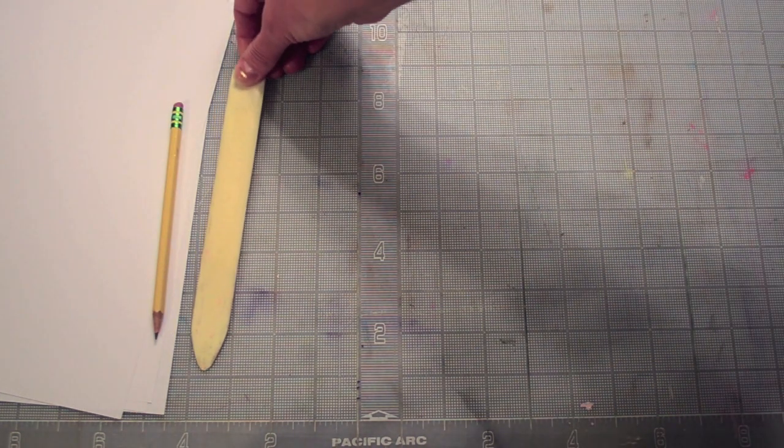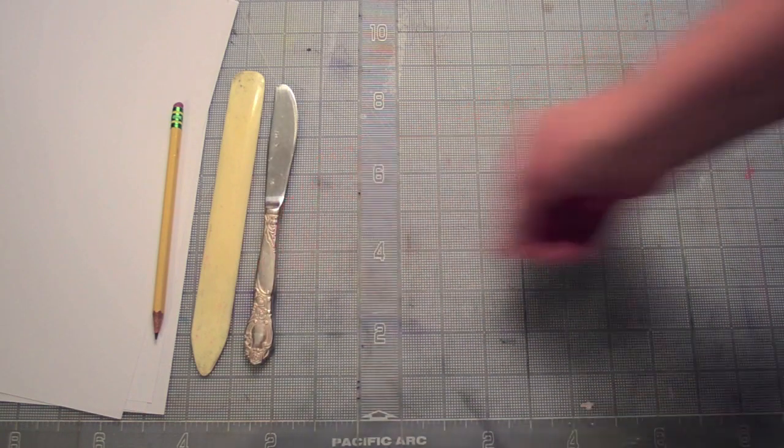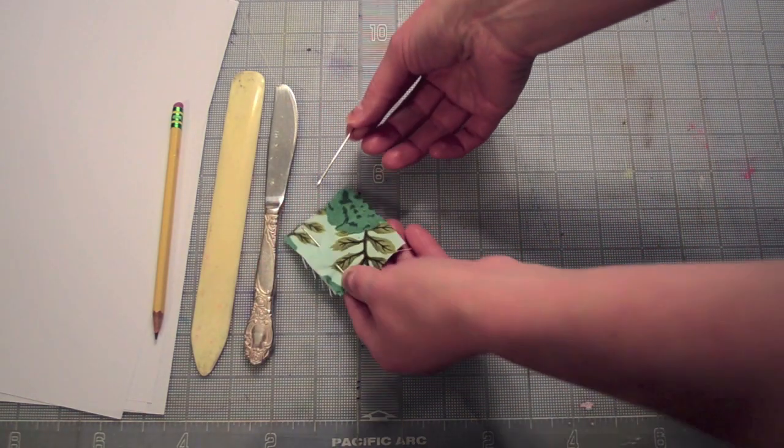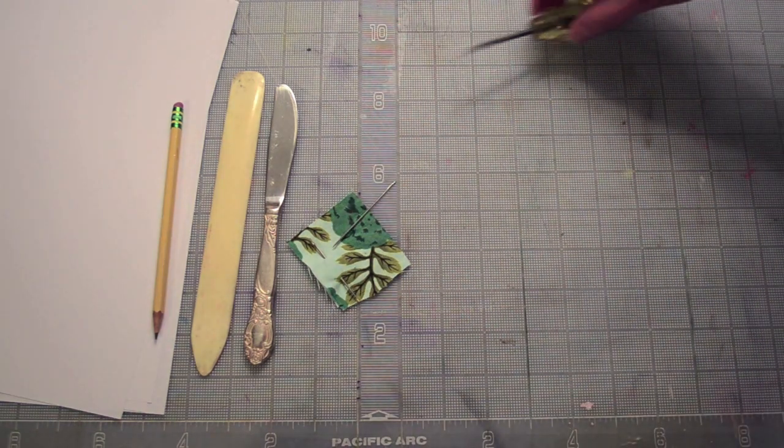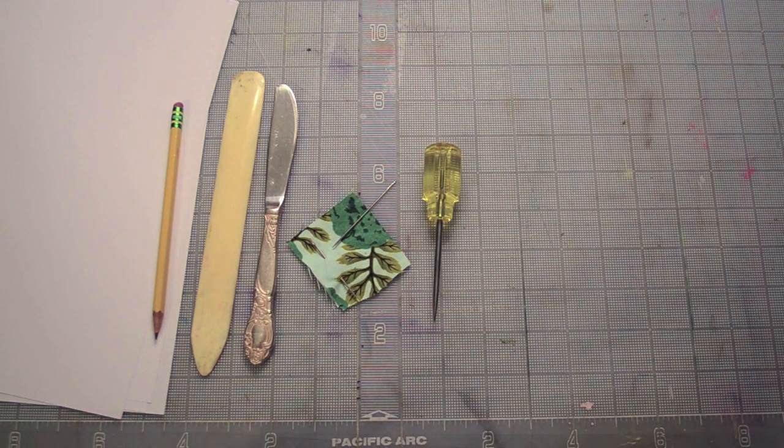a bone folder or other folding tool - even a dull butter knife will work - a heavy-duty needle, an awl for punching holes. This is optional because you can just use your needle but the awl will be useful if you're making many books.